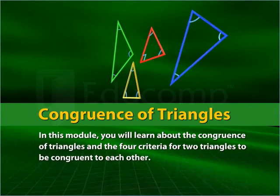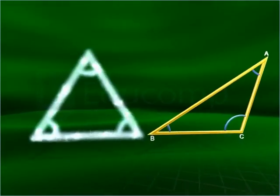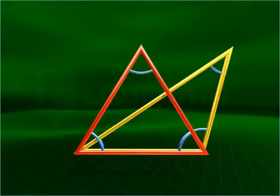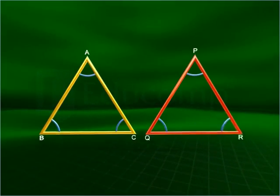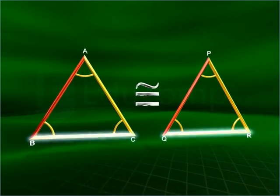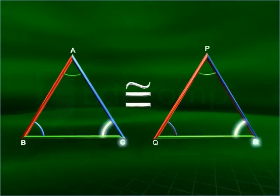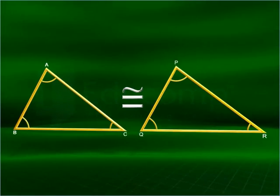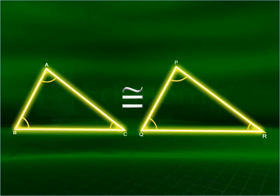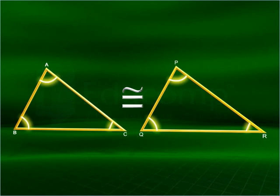Congruence of triangles. In this module, you learn about the congruence of triangles and the four criteria for two triangles to be congruent. Two triangles are congruent when you can superimpose one triangle on top of the other. Two triangles are congruent when the corresponding sides and angles are equal. Note that for triangles to be congruent, the corresponding parts should be congruent: the corresponding line segments should be equal in length and the corresponding angles should have equal measurements.